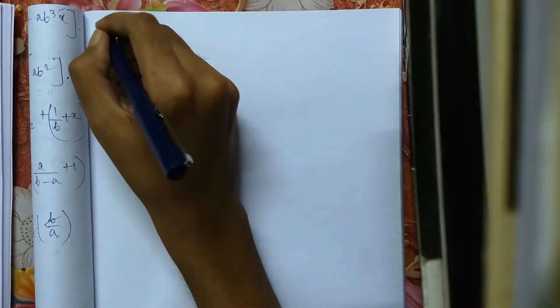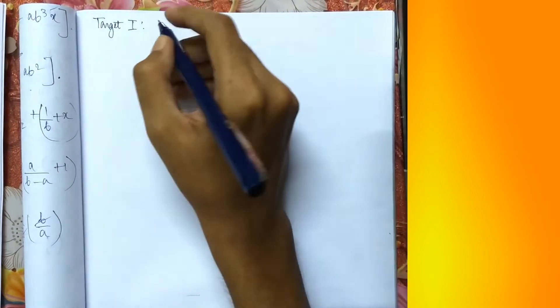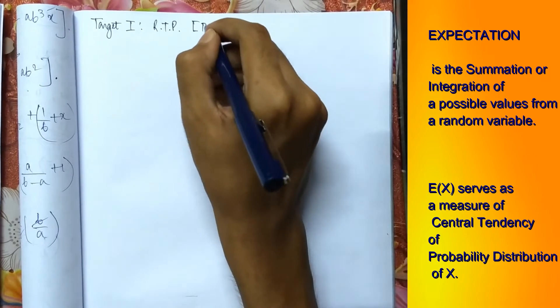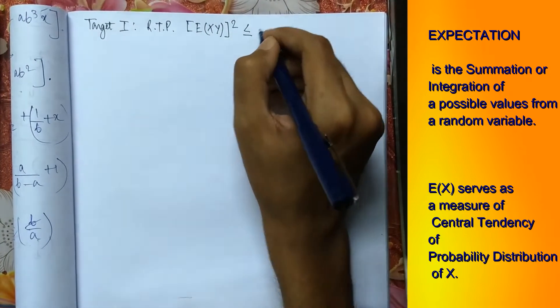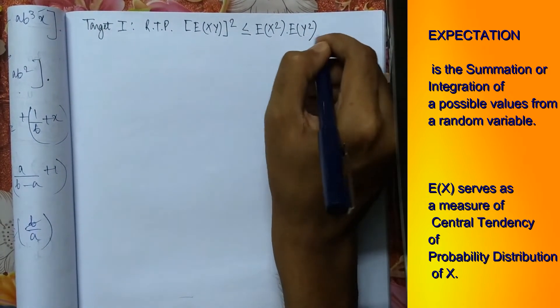Here we have our first target. Say target 1 is to prove, required to prove that expectation of XY whole square less than equals expectation of X square into expectation of Y square.